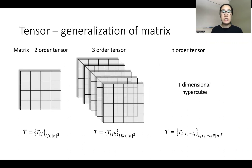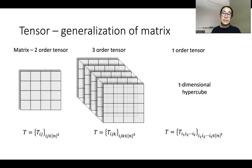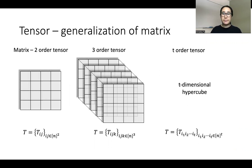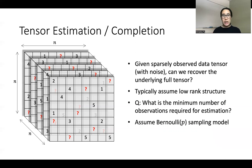Think of a tensor as a generalization of a matrix, where a matrix is simply a two-order tensor in which each data point is indexed by two indices denoting the row and the column. In general, a t-order tensor can be visualized as a t-dimensional hypercube where every data point is indexed by t indices. We're considering the task of tensor estimation or completion, where we are given a sparsely observed data tensor that could also be noisy, and the question is: can we recover the underlying full tensor?